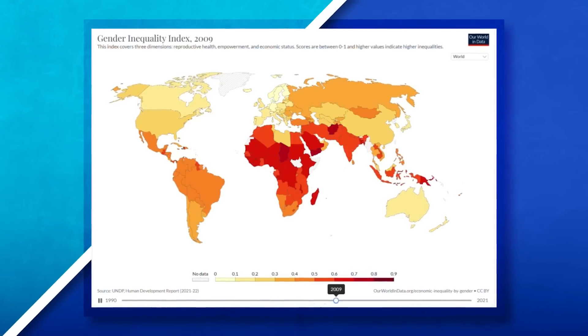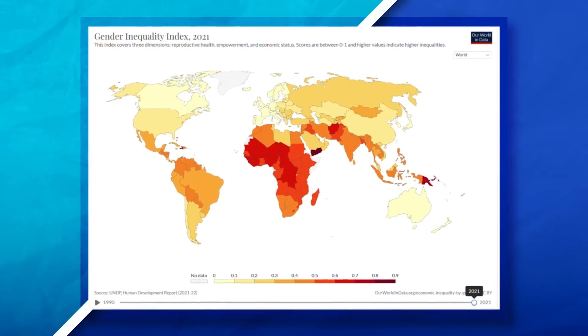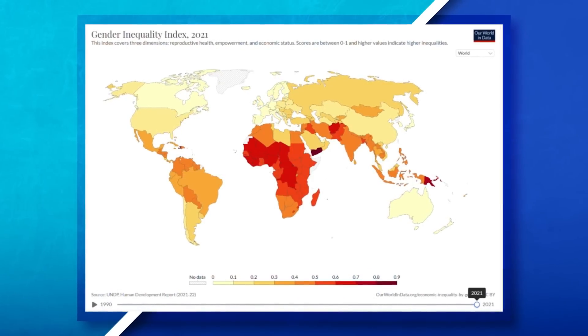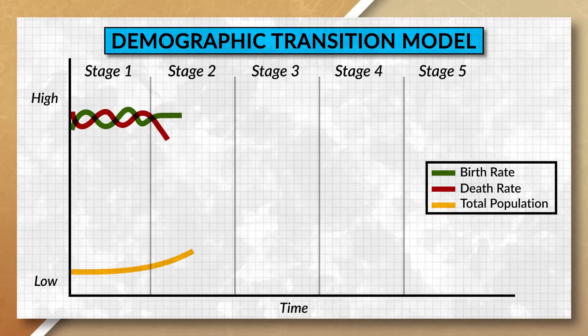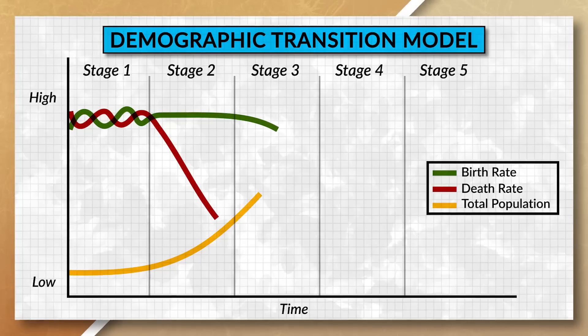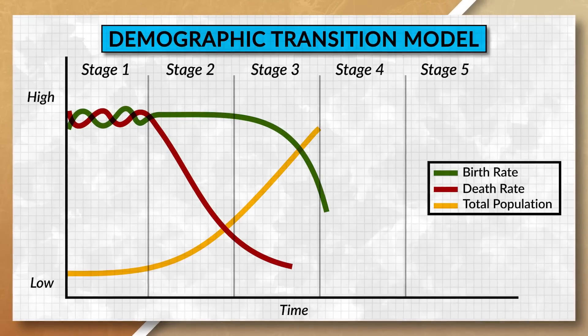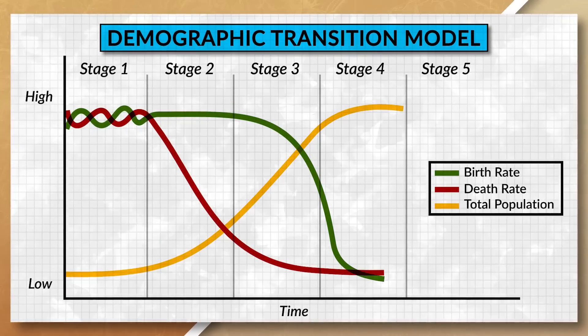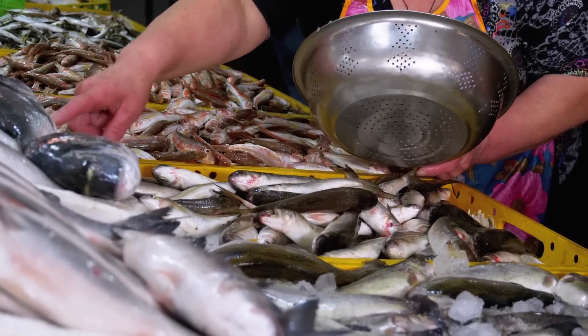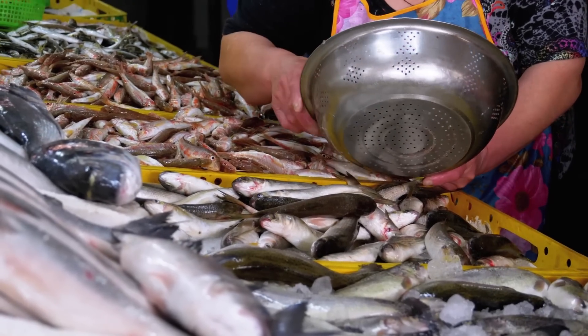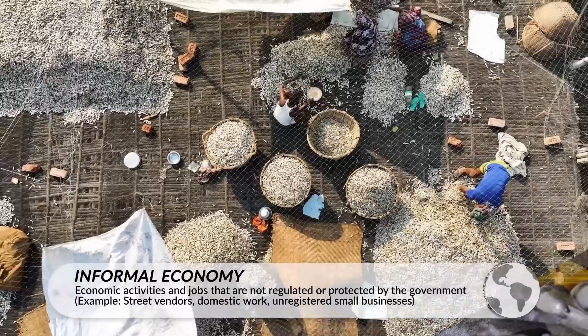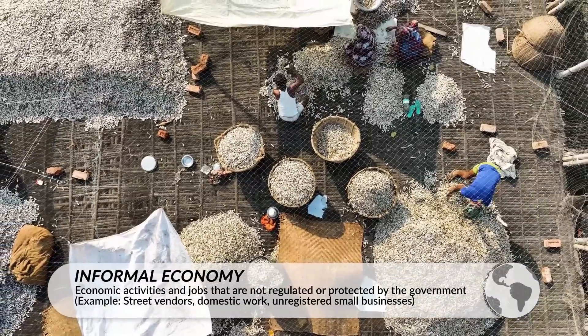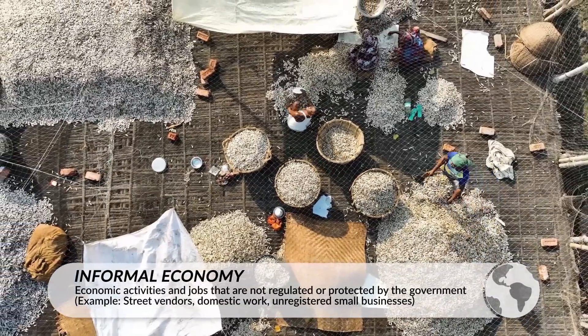Today we can see that women around the world are gaining more economic, political, and social opportunities. As countries continue to develop and advance in the demographic transition model, women start to gain more opportunities in society. However, countries that lag behind in their economic development often tend to have more traditional gender roles in place, which often places women in roles that are part of the informal economy — jobs that are not regulated or monitored by the government.